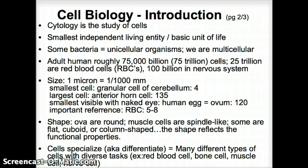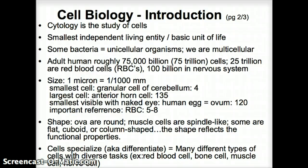Cells are very specialized — we call that differentiated. We have stem cells that start as one type, and then we differentiate them, depending on their task, into red blood cells, bone cells, muscle cells, nerve cells, and so forth.